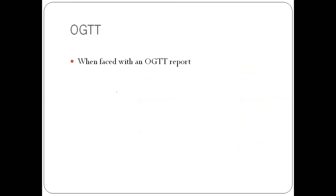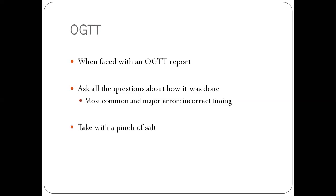Whenever you are looking at an OGTT report, you should ask all the questions about how it was done, which glucose was taken, who measured that glucose. Most common error in OGTT is incorrect timing. Most samples are not taken at two hours. They are taken at one hour, one and a half hour, two and a half hour, three hours. Always take the OGTT with a pinch of salt, especially when these caveats are not followed.